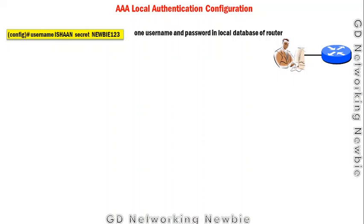It is recommended that when configuring AAA authentication on a device, we should first add at least one username to the local database. If it is server-based, we should have at least one local admin user so that if the server fails, we can still access the device. As a backup plan, we keep at least one username and password in the router's local database.